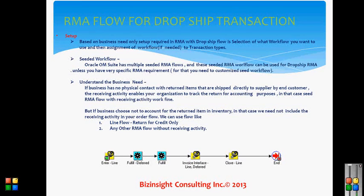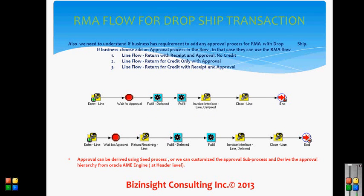So if you want to record the receiving activity for accounting purposes, use any ordinary RMA flow with receipt and credit. But if you don't want to record the receiving activity, you can use a flow similar to 'Line Flow Return for Credit Only.' As you can see in this workflow, there is no receiving activity.